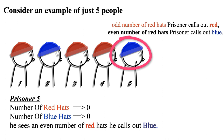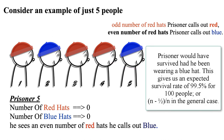Generally, someone knows whether the group of N-1 people started with an odd or even number of red hats, and they know the number of red hats that have gone before them. If the number of red hats that have gone before is even, the number of red hats including them and those forward will be as indicated by the first person. If odd, it will be opposite. So all but the first person survives, giving an expected survival rate of 99.5% for 100 people.